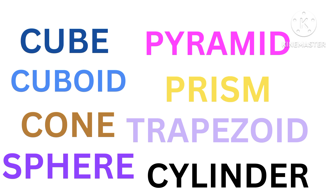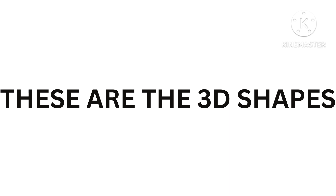So far we have learnt cube, cuboid, cone, sphere, prism, trapezoid, and cylinder. These are 3D shapes.